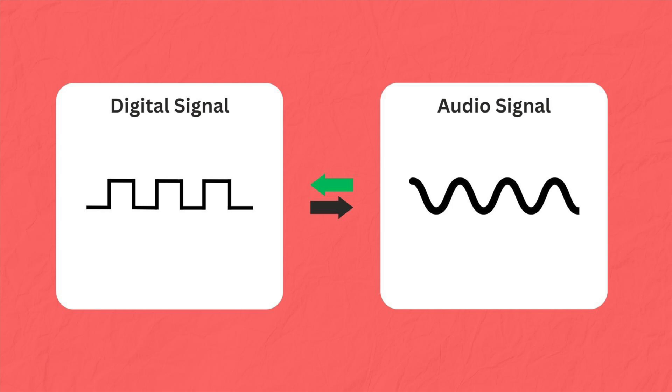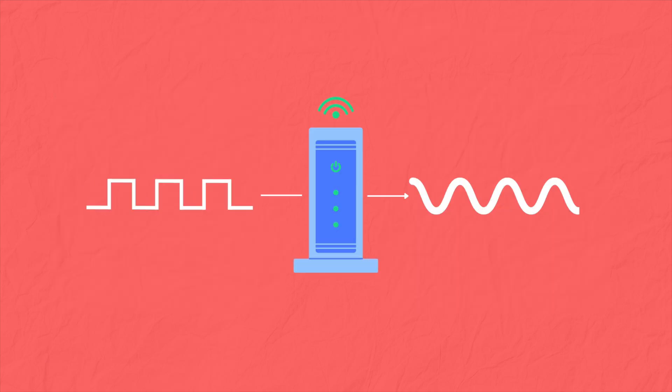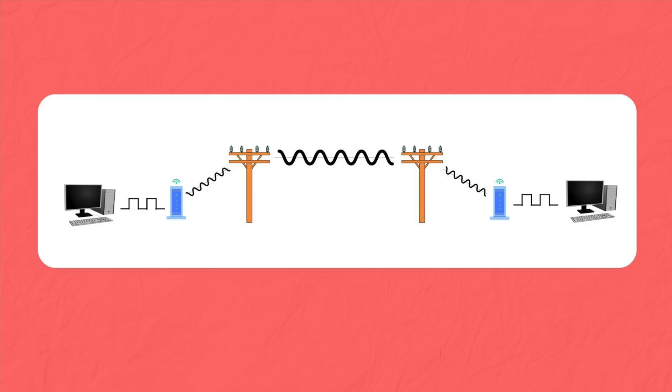They were able to convert these back and forth using modems, the same type of modems that we use today. Modem is literally short for modulator demodulator. So their job is simply to modulate digital data, aka turn it into an audio signal, or demodulate the audio signal, aka turn it back into digital. This is how they were able to connect computers in different networks over a telephone line that only understood audio signals.